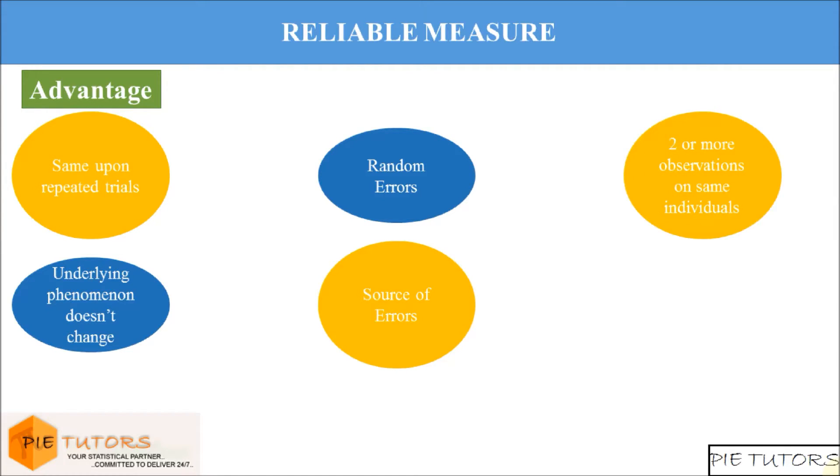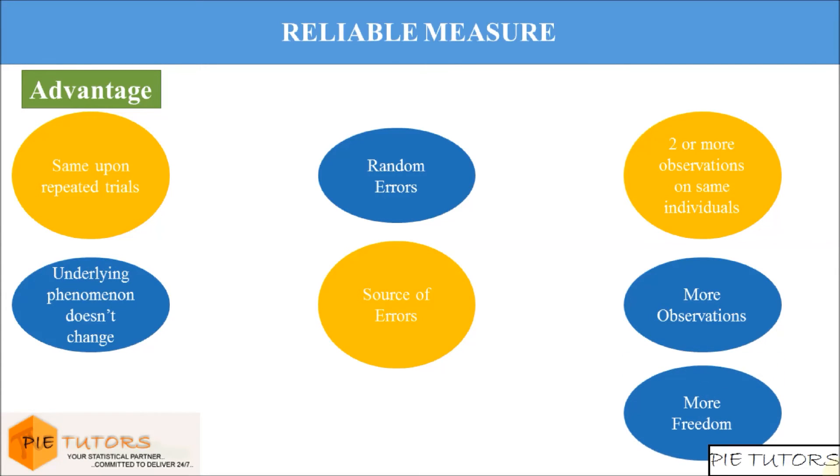One needs two or more independent observations on the same people. The more independent observations we have on a measurement of a concept taken at different points of time or with different forms of measurement, the more freedom we gain to establish reliability.